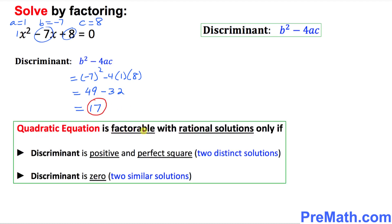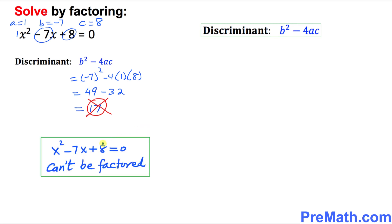A quadratic equation is factorable with rational solutions only if the discriminant is either a positive perfect square or 0. In this case, 17 is positive but not a perfect square — for example, 9 = 3² and 16 = 4² are perfect squares, but 17 is not. So this given quadratic equation cannot be factored.